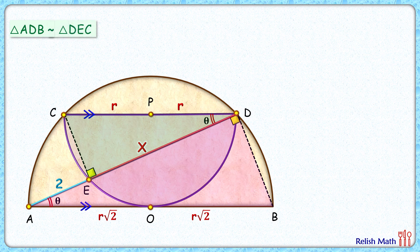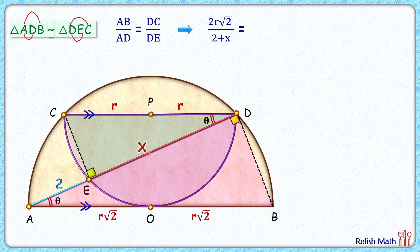As the triangles are similar, the ratio of corresponding sides gives AB upon AD equals DC upon DE. Putting in the values: AB is 2r√2, AD is given as 2 plus x, DC is r plus r which is 2r, and DE is x. Solving, the 2s and the r's cancel on both sides.